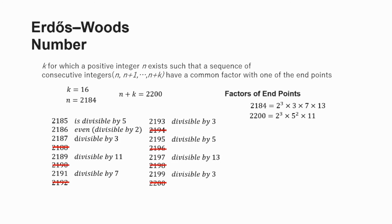And we can actually double check this to see if the numbers before this series or after this series meet the same criteria. For example, one less than the beginning point, so 2,183, it's not divisible by any of these factors. And if we go one further, 2,201, that's also not divisible by any of these factors, which makes this a unique set, giving us the Erdos Woods number of 16.